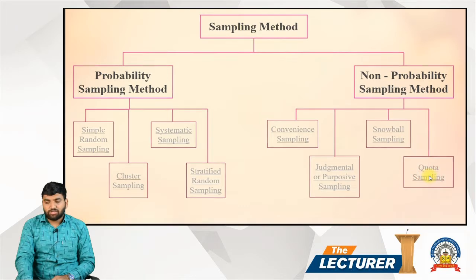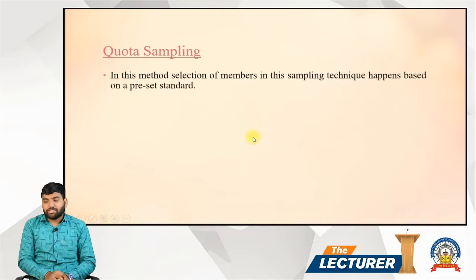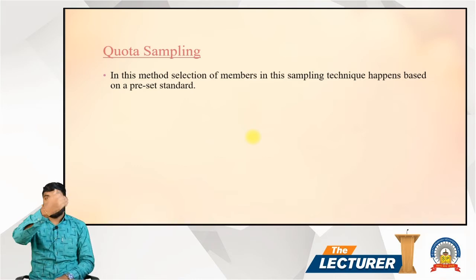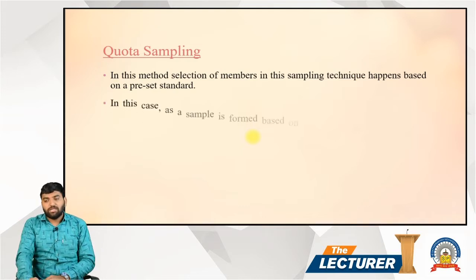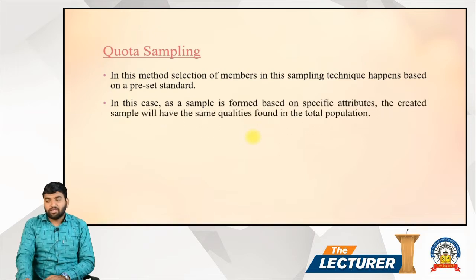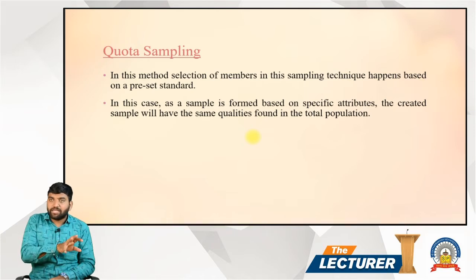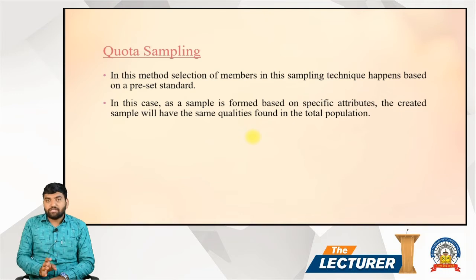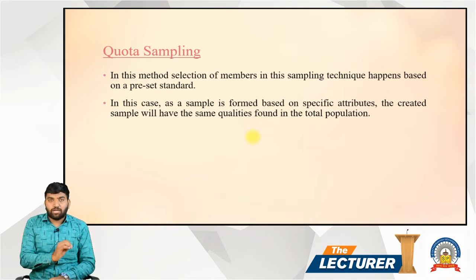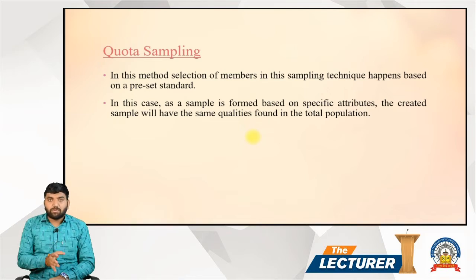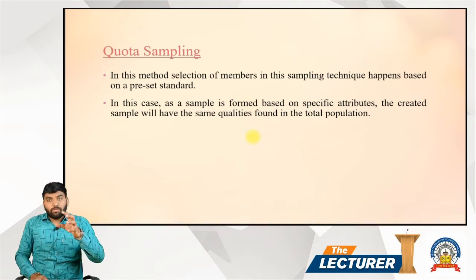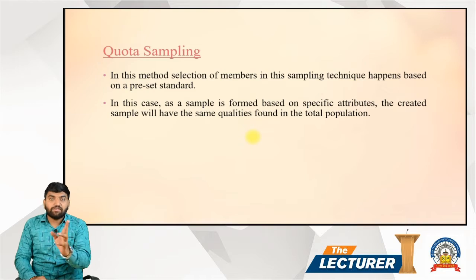The next method is quota sampling. In quota sampling, the selection of members happens based on preset standards. The sample is found based on specific attributes, and the created sample will have the same qualities found in the total population. For example, suppose you are organizing an event where entry is given only to master's students — all selected participants share that same attribute.